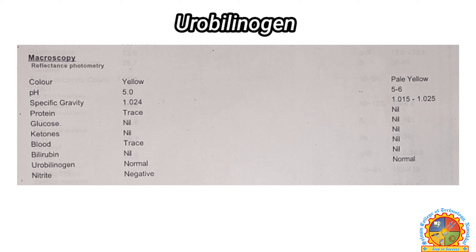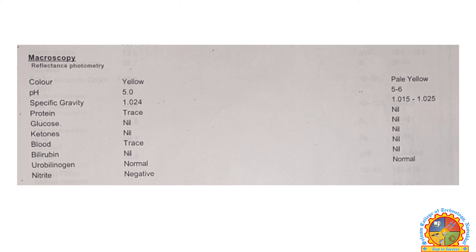Next, urobilinogen. Urobilinogen is a chemical produced as a byproduct of reducing bilirubin. Its presence is normal in urine. But if there is no or only a little amount of urobilinogen present, it means the liver is not working properly.